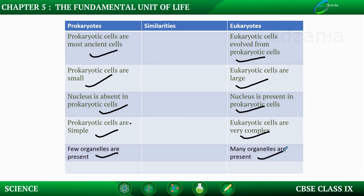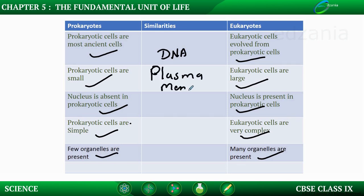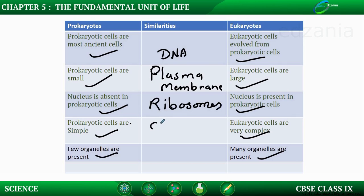Both prokaryotic and eukaryotic cells share several similarities: both contain genetic material called DNA, both contain a plasma membrane, both contain non-membranous structures called ribosomes, and the inner compartment of both cells is filled with cytoplasm.